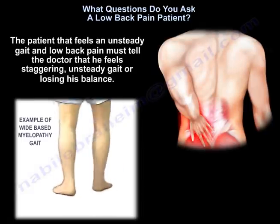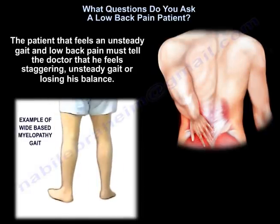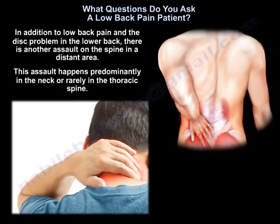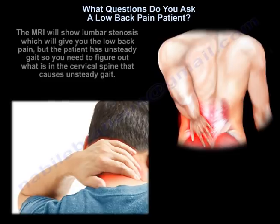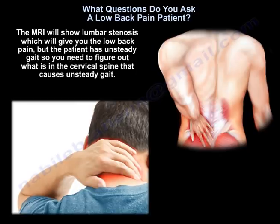The patient who feels unsteady gait along with low back pain must tell the doctor they feel staggering, unsteady, or are losing their balance. So in addition to the low back pain and the disc problem in the lower back, there is another assault on the spine in a distant area — predominantly in the neck or thoracic spine. The MRI will show lumbar stenosis causing the low back pain, but you also need to figure out what in the cervical spine is causing the unsteady gait.